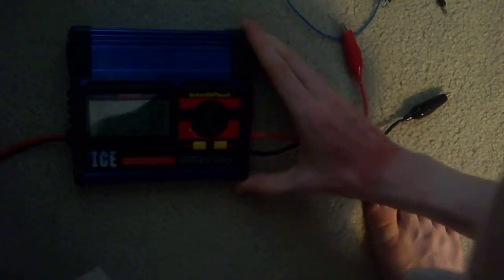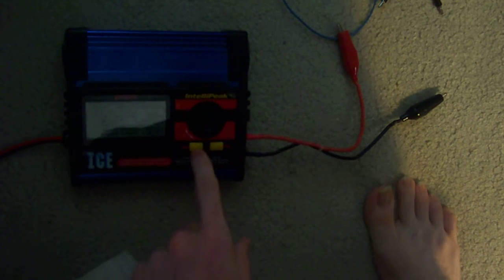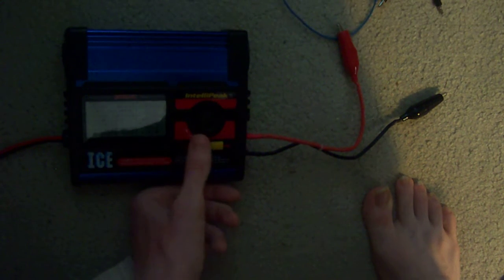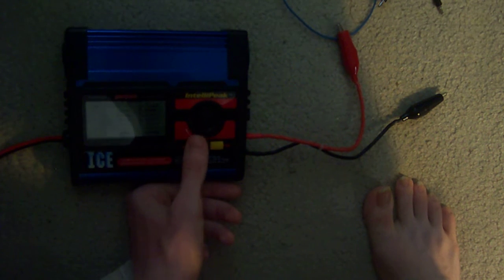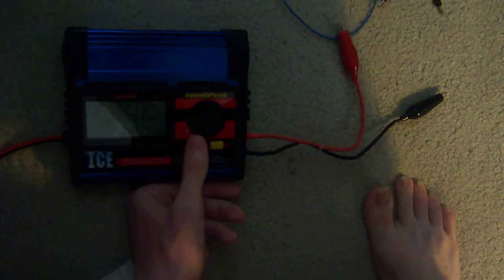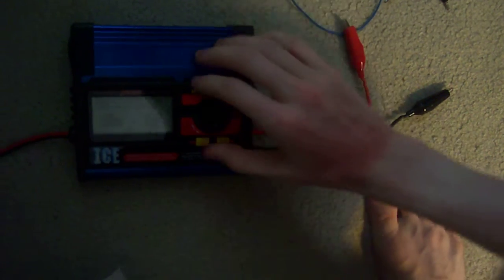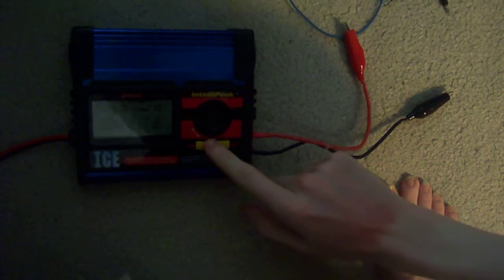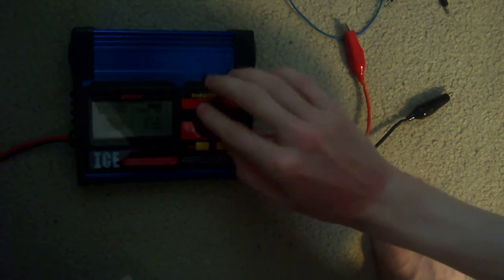What I'm using here is called a Duratrax ice. This is used in the radio control hobby and is usually used as a battery charger and discharger, but I can also use this as a voltage regulator. So I can take 12 volts of power and be able to convert it to 1 to 8 volts at up to 10 amps of current.